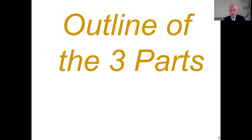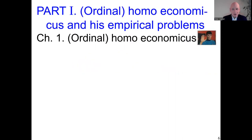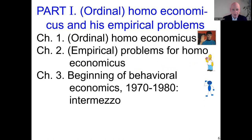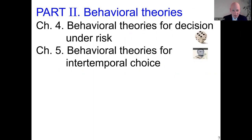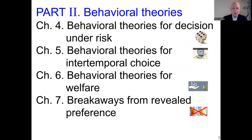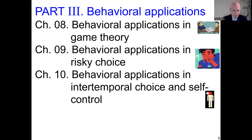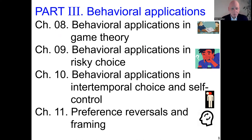Welcome to this first recording of meeting three. I start again with an outline of everything we cover — the three parts of the whole course. In meeting one I introduced homo economicus, mentioned empirical problems, and the beginning of solutions. Meeting two had behavioral theories with emphasis on theory: chapter four on decision under risk and chapter five on intertemporal choice. Today we continue with chapter six, then move to part three applications.